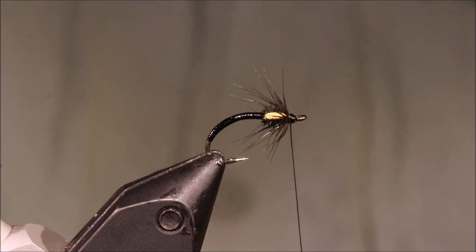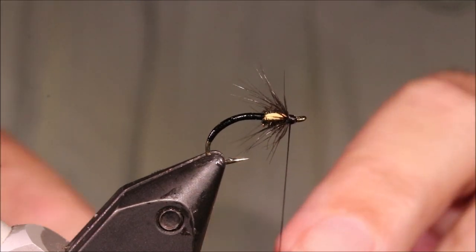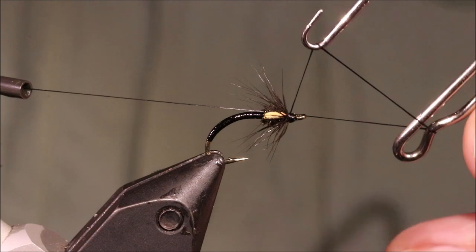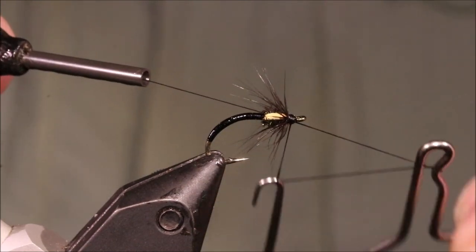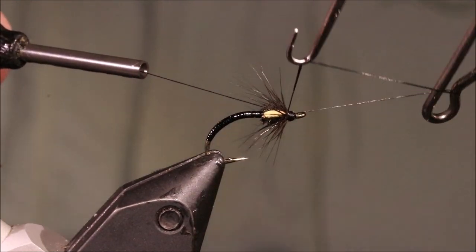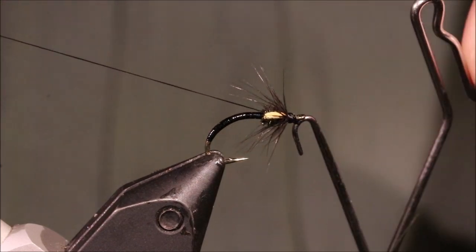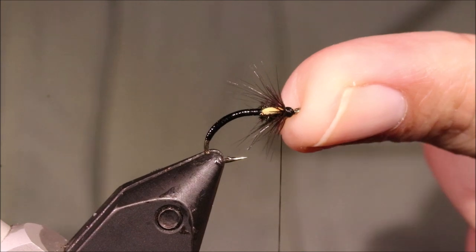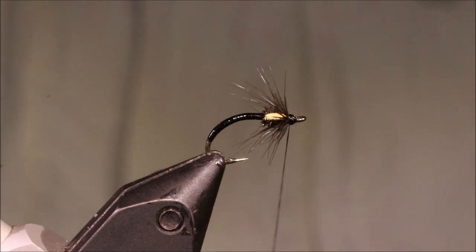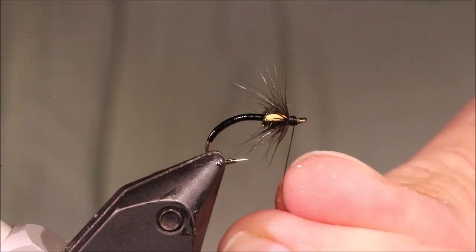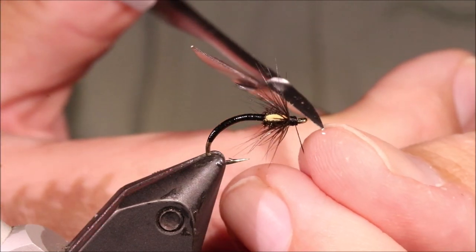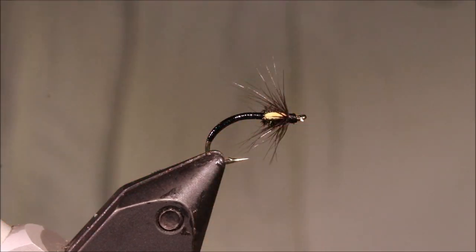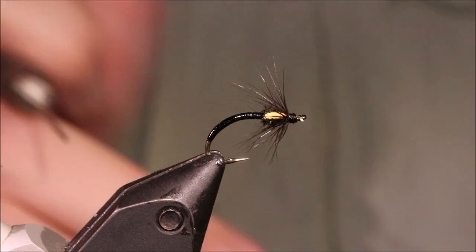So that's it, it's a really easy fly to tie and it just catches fish like crazy. If there's midges coming off, black buzzers coming off and you're on a bullet, tie one of these on. So whip finished, trim your thread, and just varnish the head and that's it.